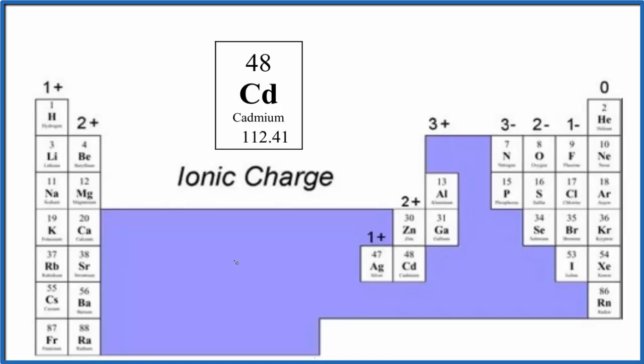Like iron, Fe 2+ or 3+. So cadmium, when it forms an ion, it loses two electrons and becomes Cd 2+. That's the cadmium ion.